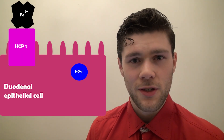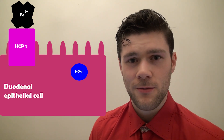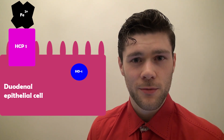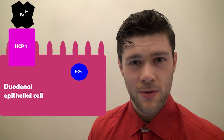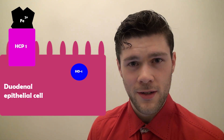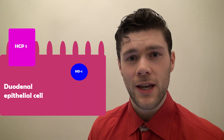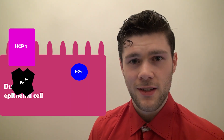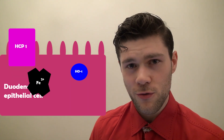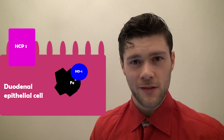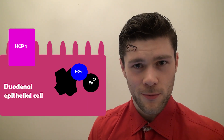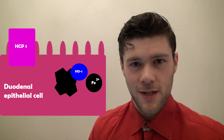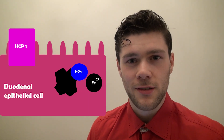Next, onto heme. If you eat meat the heme groups will enter your gut and be transported across the epithelial membrane by a protein called HCP1. Next, the enzyme HO1 is responsible for removing ferrous iron from the heme group. Again, you've got free iron in your epithelial cells.